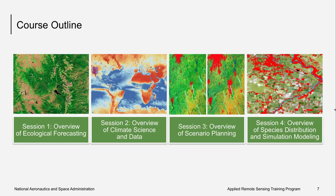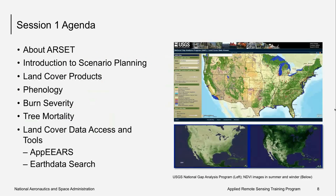Here's an overview of the general course agenda. This week, we'll be providing an overview of ecological forecasting, and I'll be talking about some of the products that we will eventually be able to use within scenario planning. I'll first give a brief introduction about the ARSET program and then talk a little bit about scenario planning. Then we'll discuss various land cover products available that can be used for scenario planning, including things like phenology, burn severity, and tree mortality. Then I'll talk about some land cover data access tools such as APPEARS and Earth Data Search.